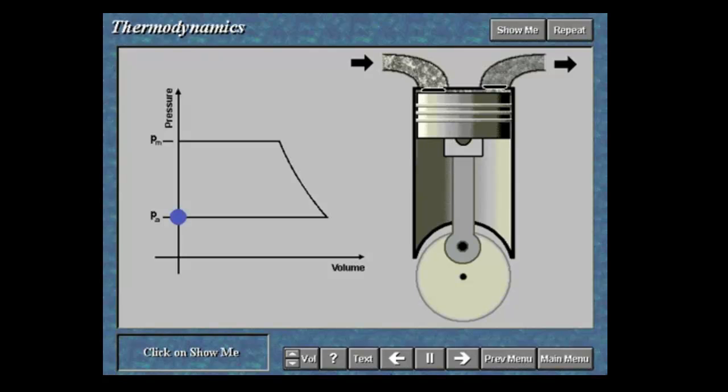Compressor operation corresponds with the ideal cycle pressure volume diagram. Click on Show Me to compare the two diagrams. When you are finished, click on the right arrow.